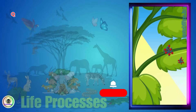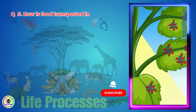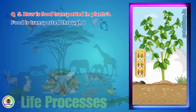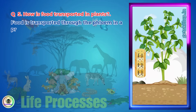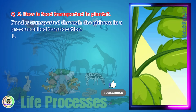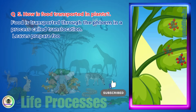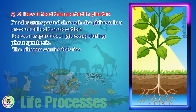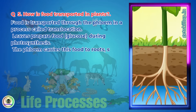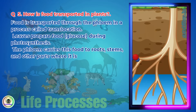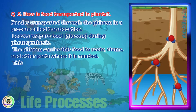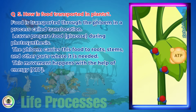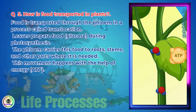Question 5. How is food transported in plants? Food is transported through the phloem in a process called translocation. Leaves prepare food (glucose) during photosynthesis. The phloem carries this food to roots, stems, and other parts where it is needed. This movement happens with the help of energy, ATP.